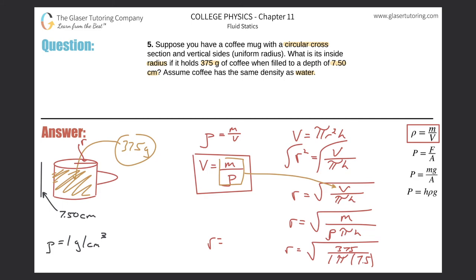So square root of 375 divided by parentheses pi times 7.5, and we get 3.99. I'm just looking at the sig figs, that looks fine. 3.99 centimeters.